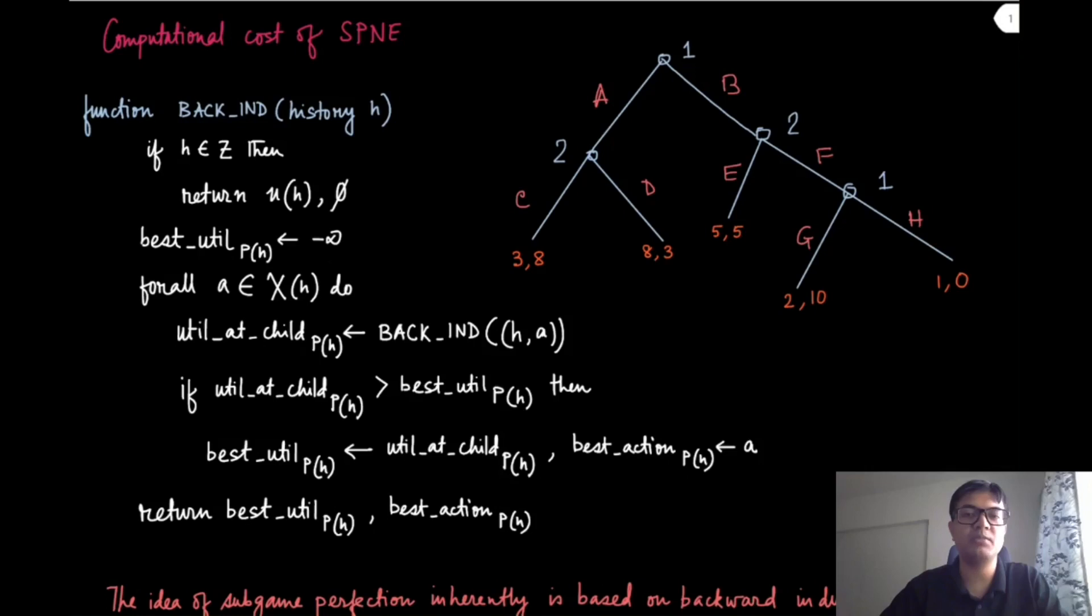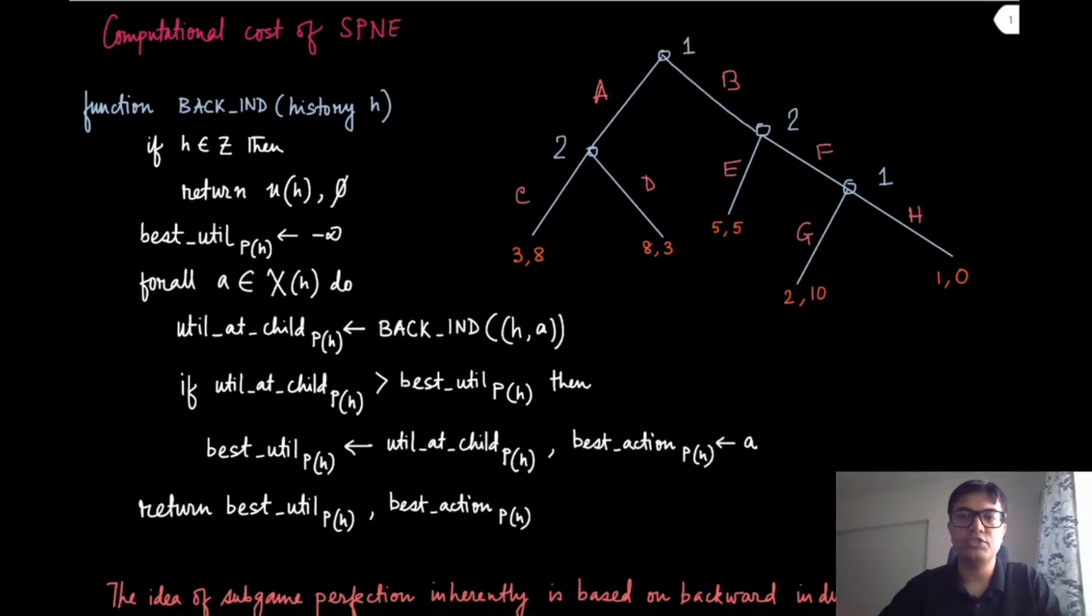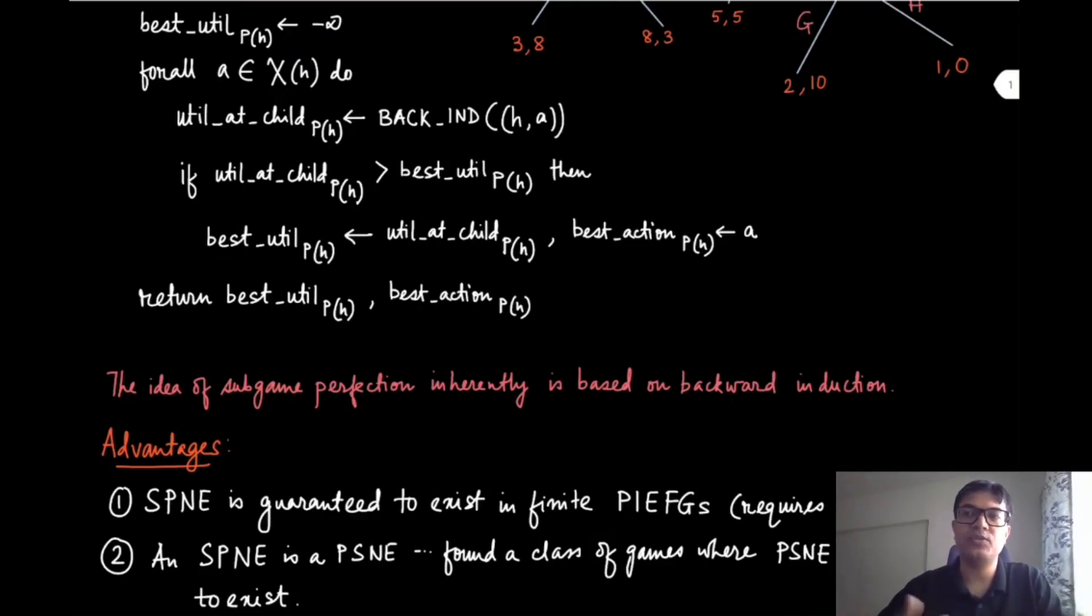This algorithm is nothing but dynamic programming, and the idea of subgame perfection is essentially based on this idea of backward induction. If you think about it carefully, you are trying to find the subgame perfect Nash equilibrium, which is a Nash equilibrium at every possible subgame. Therefore, the most natural thing is this backward induction, which starts from the leaf nodes and finds the equilibrium at every subgame and goes towards the root.